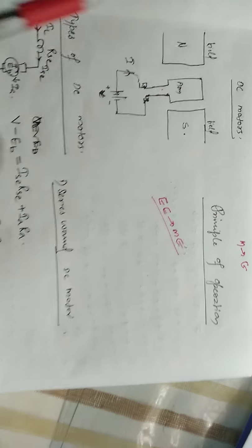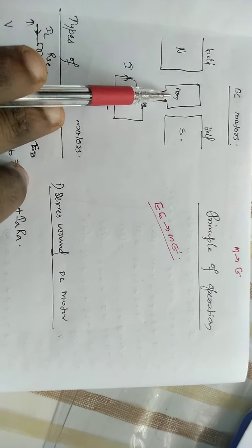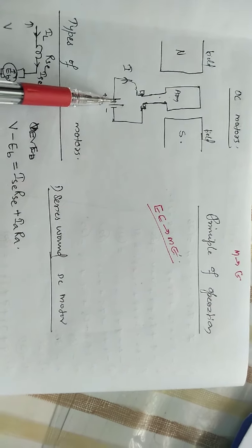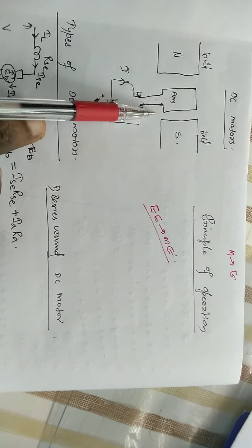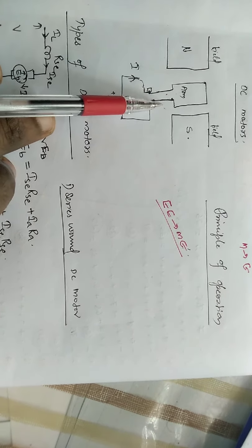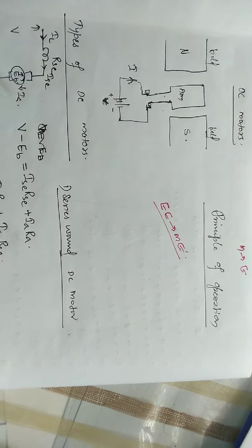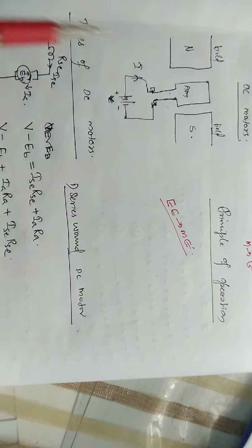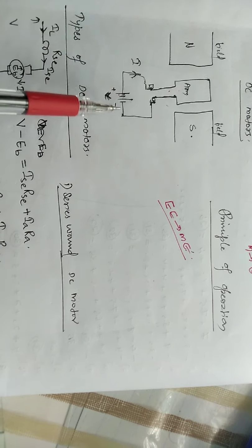We will provide supply to the magnetic field and the armature. The current in the armature will drive the machine, making it a DC motor. So the motor is a machine which converts electrical energy to mechanical energy.